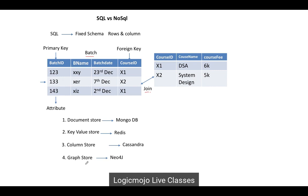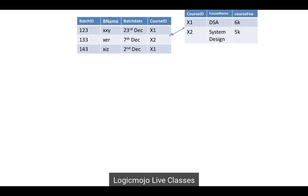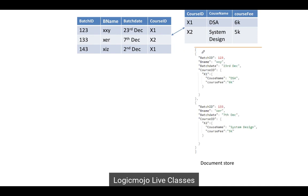Let's see the benefits of using NoSQL over SQL. In a relational database, we have the batch table with rows and columns communicating with the course table through joins. In case of a NoSQL document store, we store all the information in JSON format rather than rows and columns. Every value in the JSON is stored as a key-value pair — for example, batch ID and its value, batch name and its value.